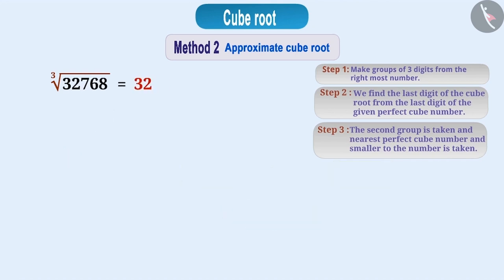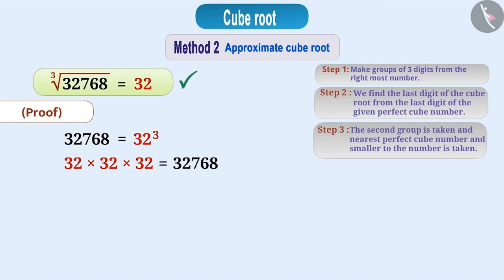If you have to verify it, how will you do it? It's easy! Since 32 is 32,768's cube root, then the opposite statement that 32,768 is the cube of 32 is true. That is, 32 cube is equal to 32,768. Thus, the result obtained is true. We see that 32 into 32 into 32 is equal to 32,768. That is, the result obtained is correct.